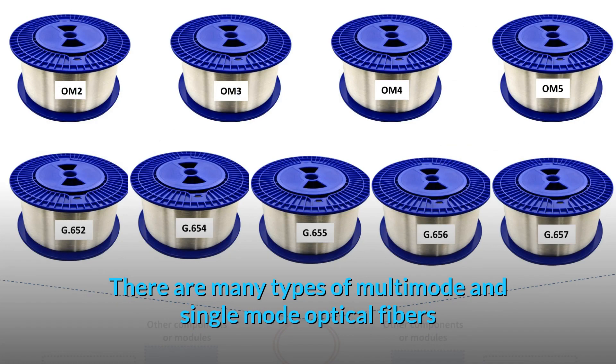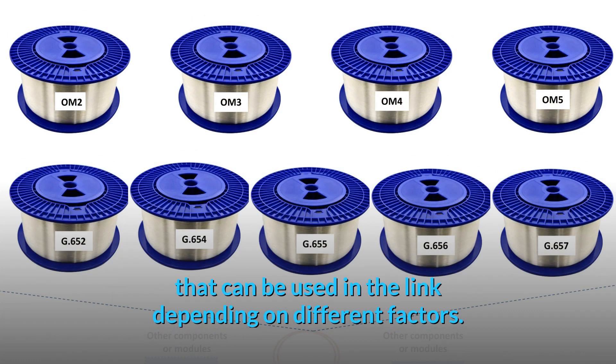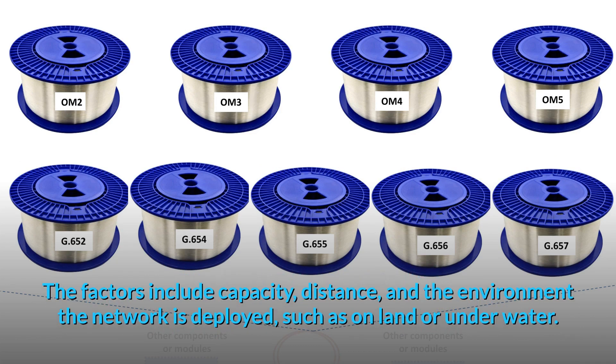There are many types of multi-mode and single-mode optical fibers that can be used in the link depending on different factors. The factors include capacity, distance, and the environment the network is deployed, such as on land or underwater.